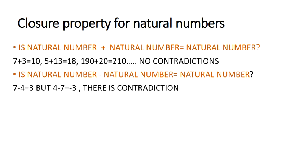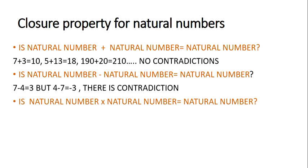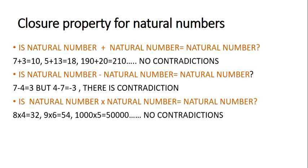Natural number minus natural number — it is not necessary that it will give you a natural number. Next, let us discuss multiplication. Natural number multiplied by a natural number gives a natural number. For example, 8 into 4 is 32, 9 into 6 is 54, 1000 into 5 gives 5000. You will find no contradiction to this rule. So we say that natural numbers are closed under multiplication — they follow closure property for multiplication.